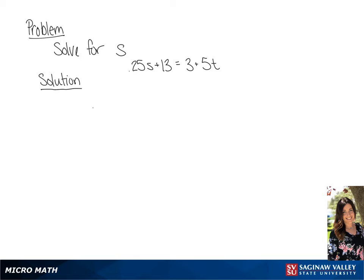We have 0.25s + 13 = 3 + 5t, and we want to solve this for s.